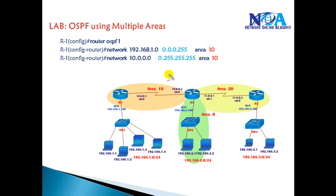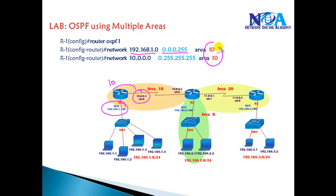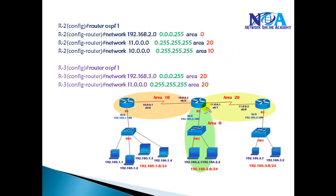Configuration-wise there is not much difference from the previous case. We address the network and write the wildcard mask just like in the single-area lab. The only difference is we need to specify that certain interfaces belong to area 10, changing the area number accordingly. The same applies to Router 2 — we address its interfaces in area 10, area 20, and area 0.